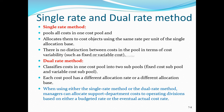Under the dual rate method, costs are classified by type — variable costs and fixed costs — and each has its own separate allocation rate and allocation base. Variable costs are allocated using one rate and fixed costs are allocated using a different rate. The key differences are: single rate uses one cost pool and one rate, while dual rate uses separate rates. Also, either budgeted or actual rates and quantities can be used.